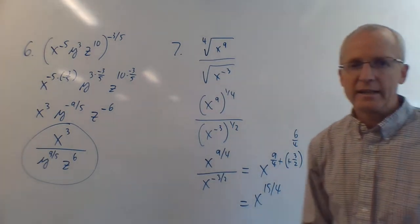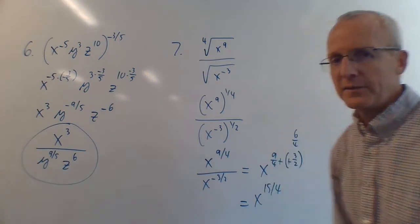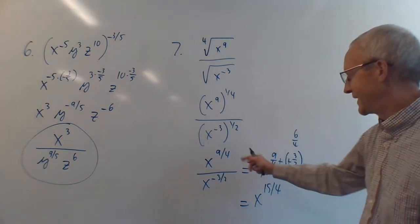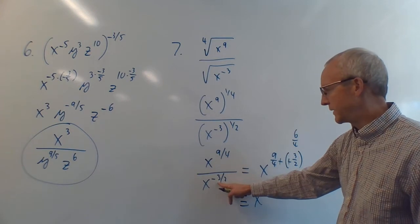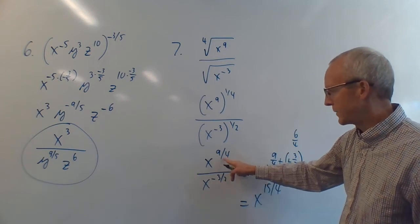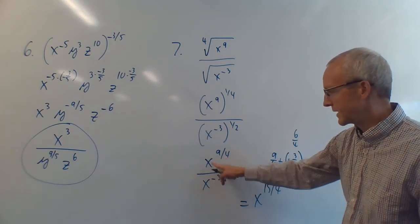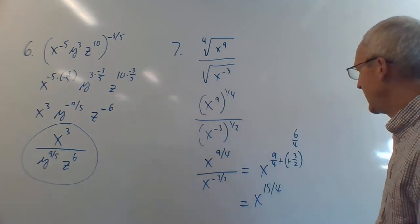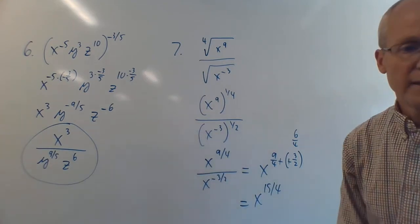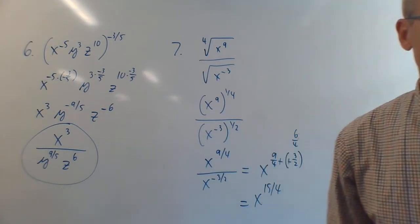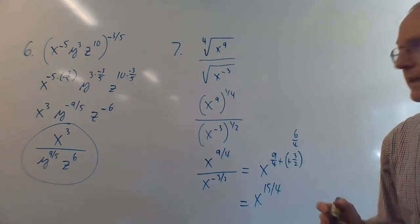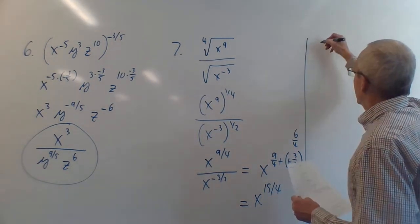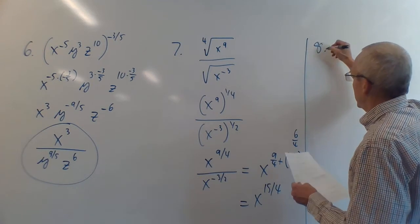Leave the answer as x^(15/4). Remember when dividing same-base terms, it's top exponent minus bottom exponent — and subtracting a negative gives plus. So 9/4 minus (-3/2) = 9/4 + 6/4 = 15/4. That's much simpler than the original expression.